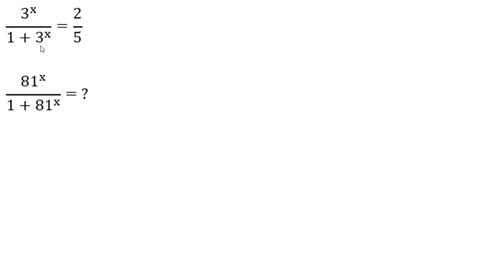3 to the x over 1 plus 3 to the x equals 2 over 5. We want to find 81 to the x all over 1 plus 81 to the x.